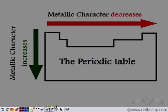In summary: in the periodic table, when we move from left to right in a period, the atomic size decreases. Due to the decrease in atomic size, the ease to remove electrons also decreases, and so the metallic character decreases. When we move from top to bottom in a group, the atomic size increases, leading to increased distance between the outermost shell and the nucleus. So the electrons are held loosely, they can be easily removed, and the metallic character increases on moving from top to bottom in a group.